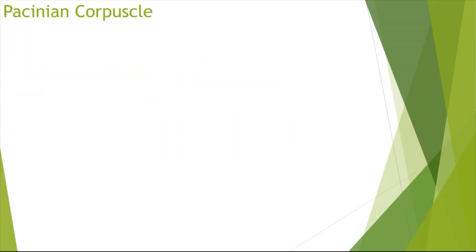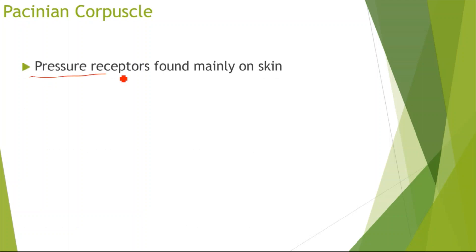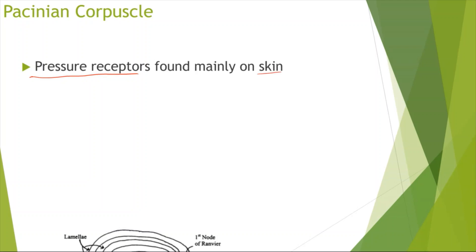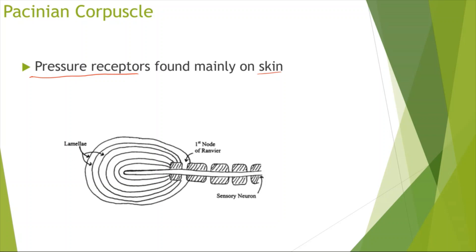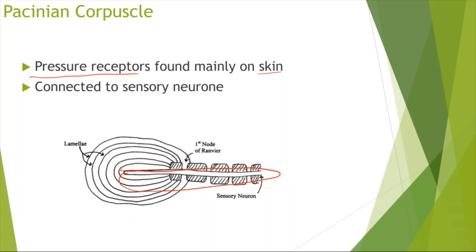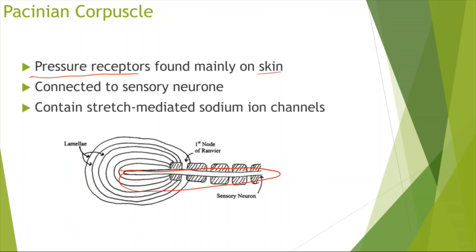Now looking at a specific type of receptor called the Pacinian corpuscle. This is a pressure receptor — it detects changes in pressure, so pressure is the stimulus. It is mainly found on the skin. As you can see in the diagram, it has a sensory neuron which passes signals to the brain to bring about a response. It also has what are called stretch-mediated sodium ion channels. These lamellae — these layers — contain the stretch-mediated sodium ion channels, which is really important.